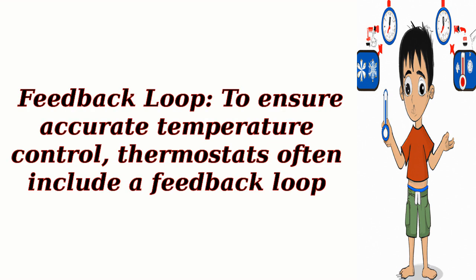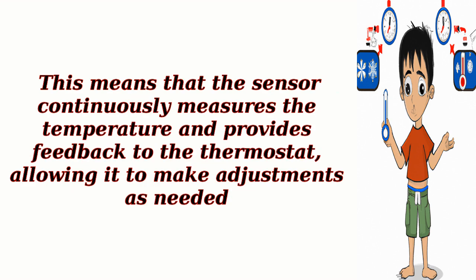Feedback Loop: To ensure accurate temperature control, thermostats often include a feedback loop. This means that the sensor continuously measures the temperature and provides feedback to the thermostat, allowing it to make adjustments as needed.